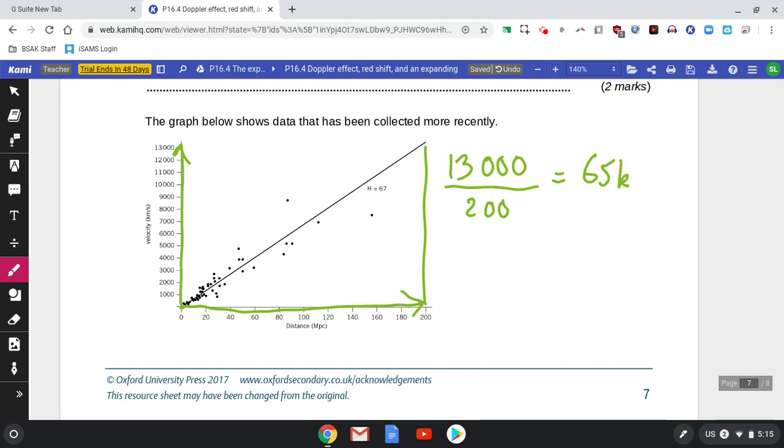Today, which is the Hubble constant, is 13,000 divided by 200, which is 65—65 kilometers per second per mega parsec. So this is the latest most accurate value for the Hubble constant which tells us how quickly the universe is expanding. Any questions please ask, but in the meantime I'll see you in the next video. Bye.